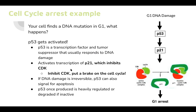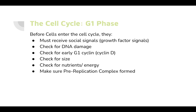Now moving on to G1 phase in more detail. G1 phase is the start of the cell cycle. Before cells enter the cell cycle they need to receive social signals — growth factor signals — and check for DNA damage, early G1 cyclin (cyclin D), that the cell is the right size, that it has enough nutrients and energy, and that the pre-replication complex (pre-RC) is formed.